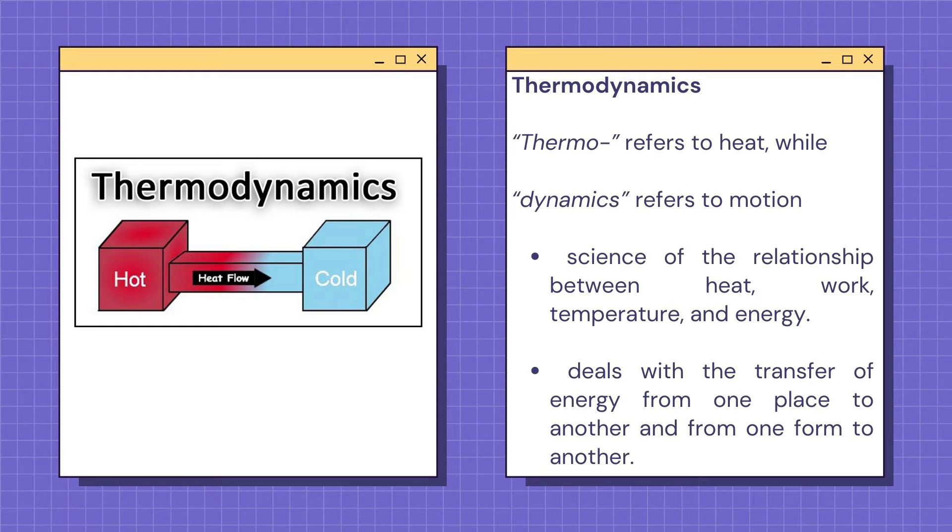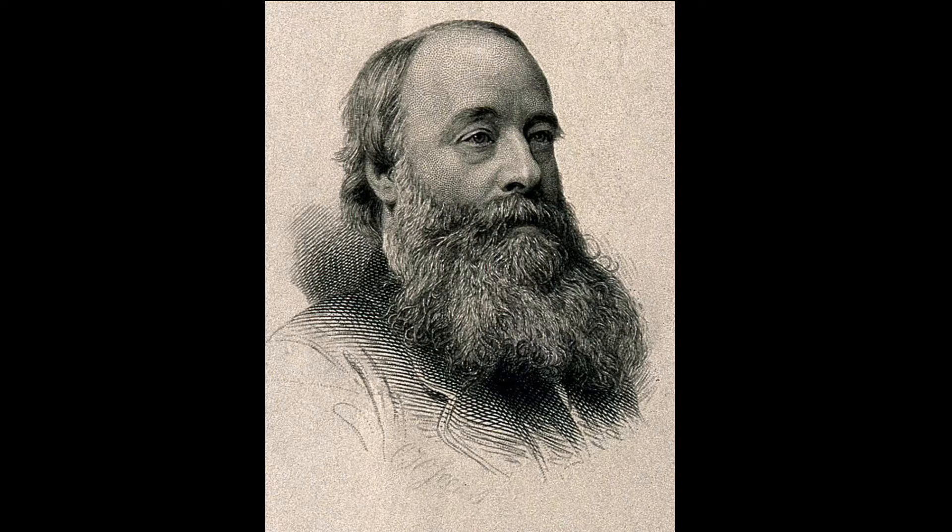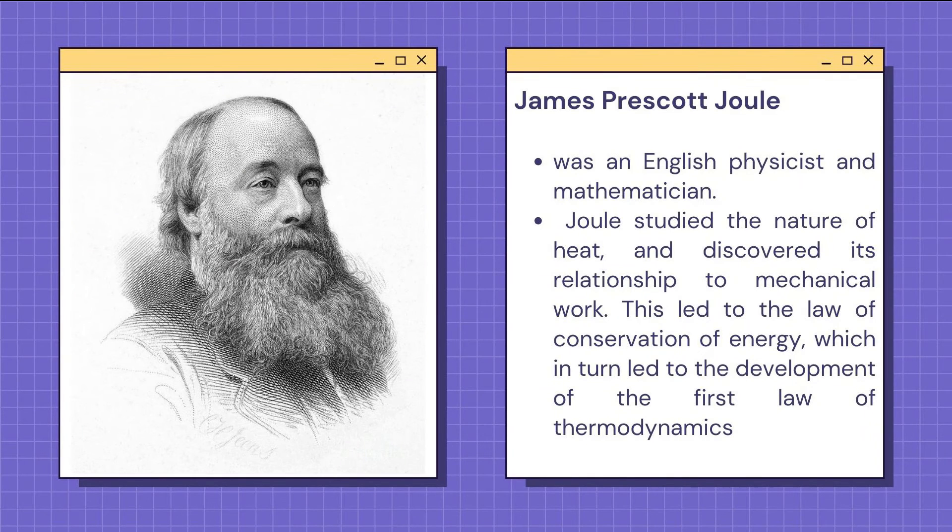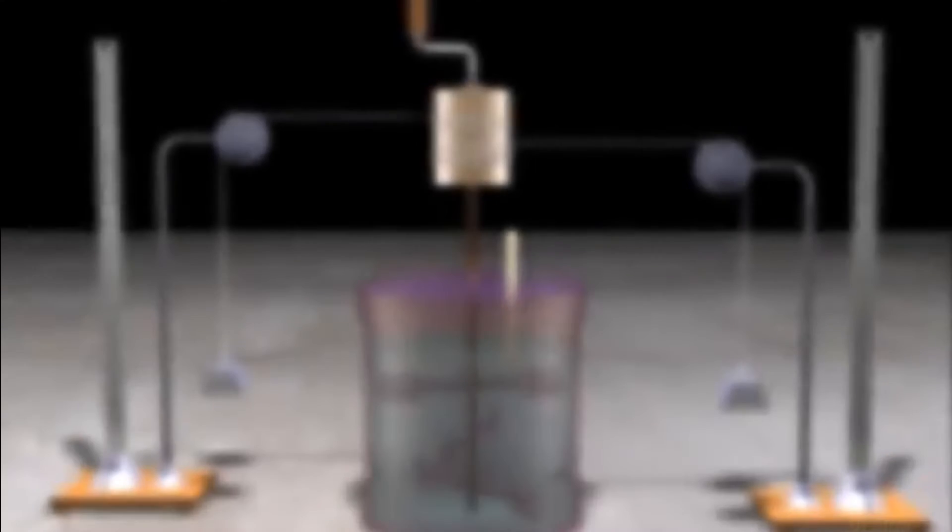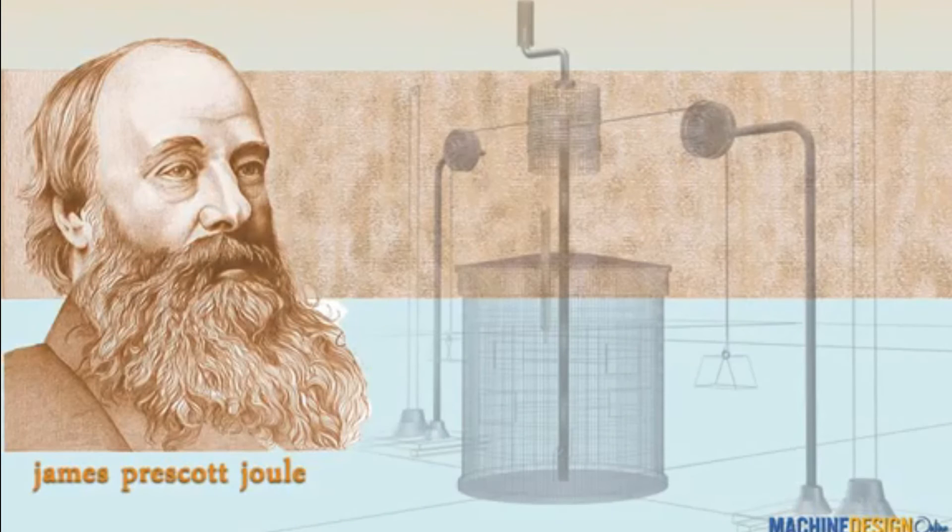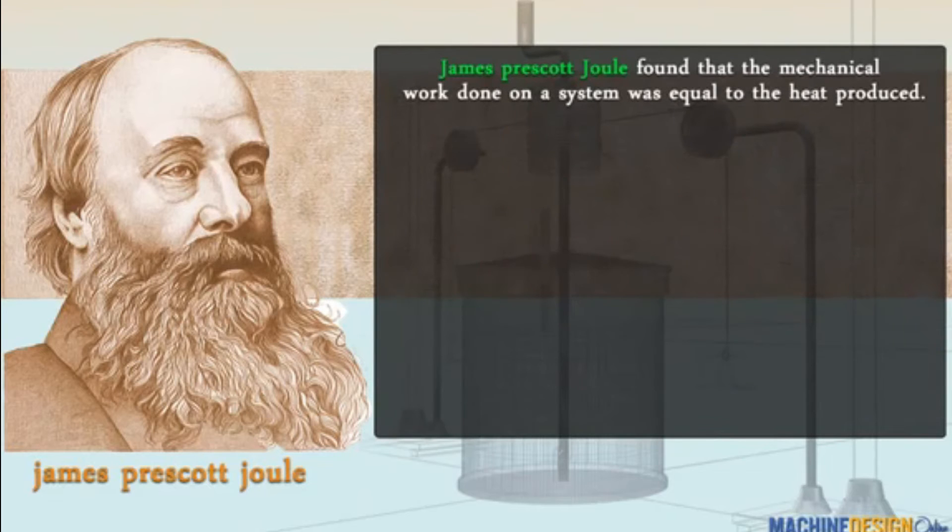Do you know this man? He is James Prescott Joule. He was an English physicist and mathematician. He studied the nature of heat and discovered its relationship to mechanical work. This led to the law of conservation of energy, which in turn led to the development of the first law of thermodynamics.